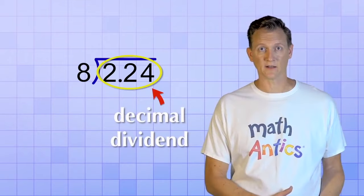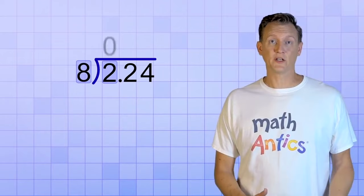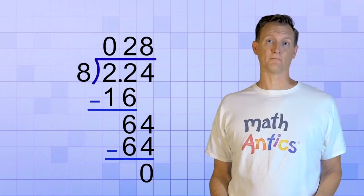If you just have a decimal dividend and the divisor is a whole number, it's really simple. That's because you can just do the long division procedure that we learned in the long division videos and the decimal point doesn't affect it at all. You just need to make sure that you bring a copy of the decimal point up into the answer line when you're done.